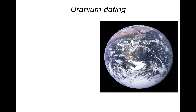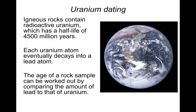The same principle applies to uranium dating. Igneous rocks contain radioactive uranium, which has a half-life of approximately 4,500 million years, or 4.5 billion years. Each uranium atom will eventually decay into a lead atom. The age of a rock sample can be worked out by comparing the amount of lead to that of uranium. You don't need to know it in any more detail than that - as with radiocarbon dating, you might just be given a two-mark question, and as long as you can recite approximately what the process involves, you should be fine.